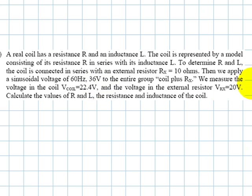And we also measure the voltage of the external resistor, 20 volts. Calculate the values of R and L, the resistance and the inductance of the coil.